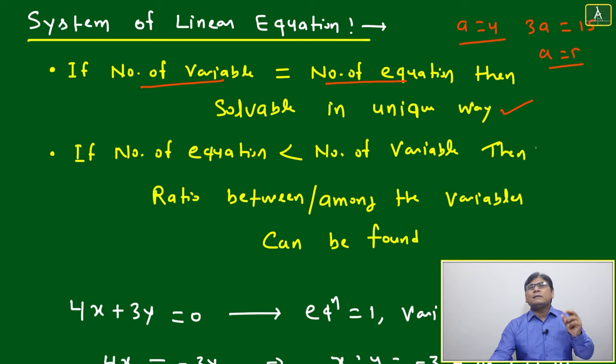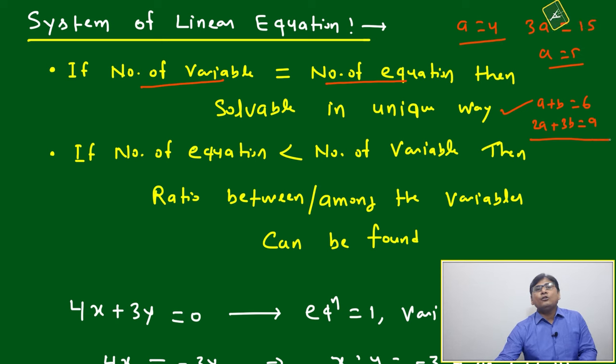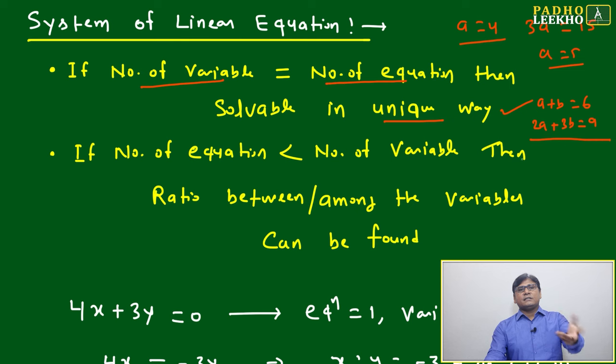Now suppose you have a + b = 6 and 2a + 3b = 9. Based on these two equations, will you be able to get the unique solution? Yes, because two variables a and b, and two equations are given—two equations where no common factor exists.